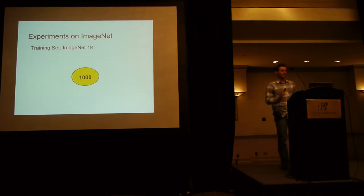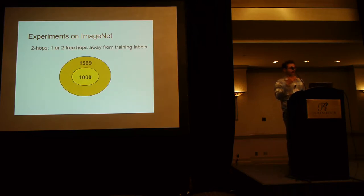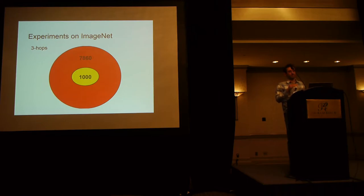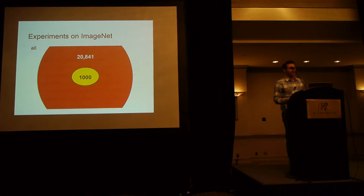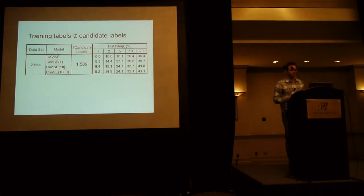Now, for experiments, we use a thousand labels for training. We use three different sets of zero-shot classes. In the first set, we include 1,500 labels that are one or two hops away from the training label in the whole set of 21,000 ImageNet labels. And the second set is images that are up to three hops away in the ImageNet hierarchy. And the last set is all of the other labels in ImageNet. As you can imagine, the task becomes more difficult as we get farther from training labels.